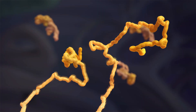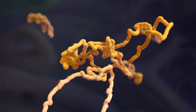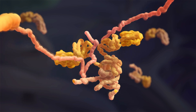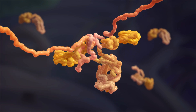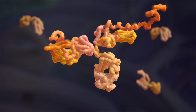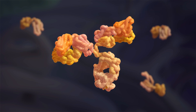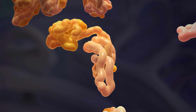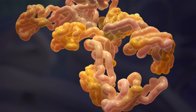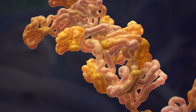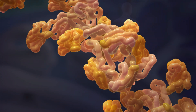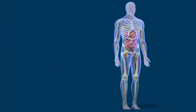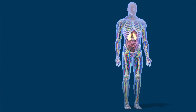In AL amyloidosis, the plasma cells produce abnormal light chains. They still attach to heavy chains to form the complete antibody, but the abnormal unattached or free light chains are prone to misfolding and aggregate to form fibrils.